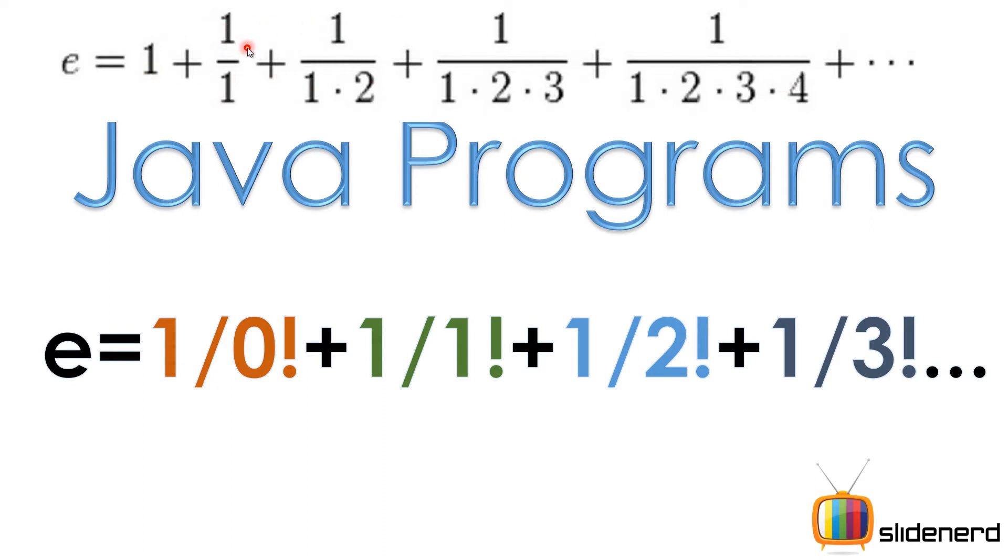We're gonna try and make a program for this. If you see clearly, it's 1, it's actually 0 over here. There is a 1/0! because 0! is 1, then you have 1/1!, this is 1/2!, 1/3! and so on. As you remember, 1×2×3 is nothing but 3 factorial.